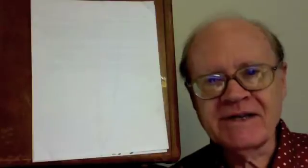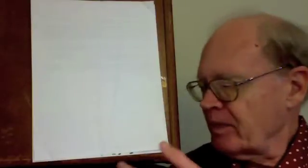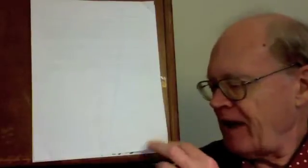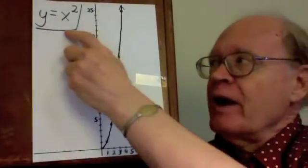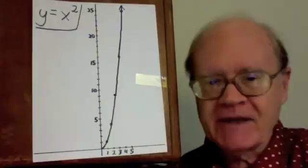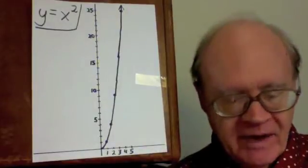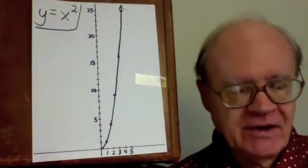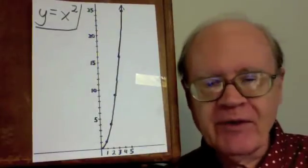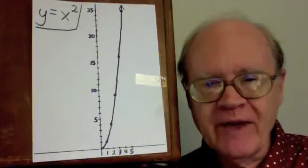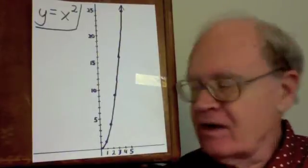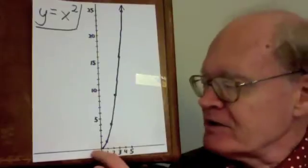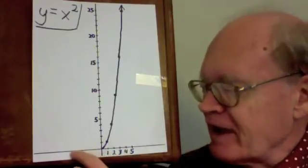This lesson is about a graph — the graph of the equation y equals x squared, meaning x times x. In this lesson, I'm only concerned with the part of the graph where the x values are 0 and positive. I'm not concerned with negative values of x.